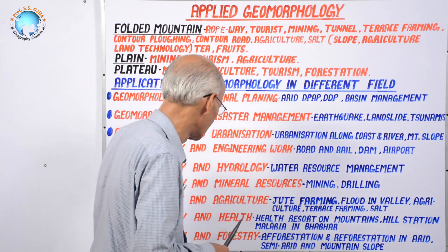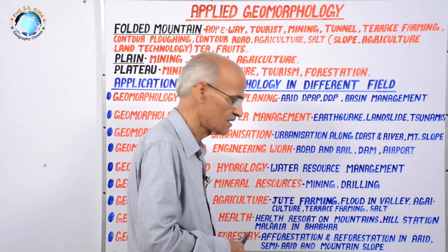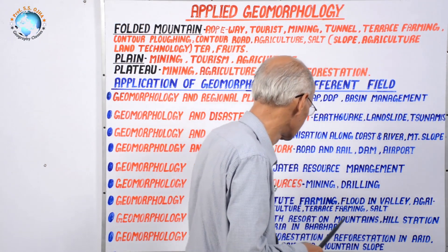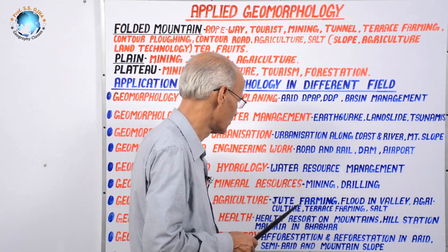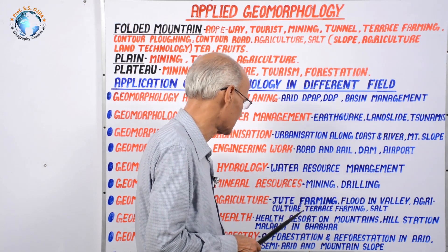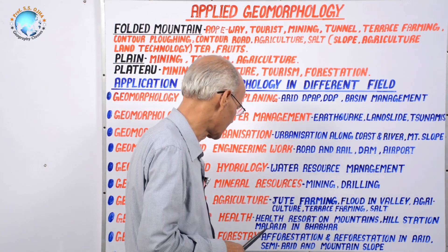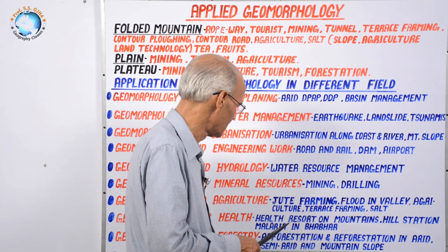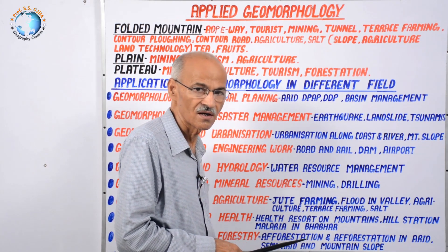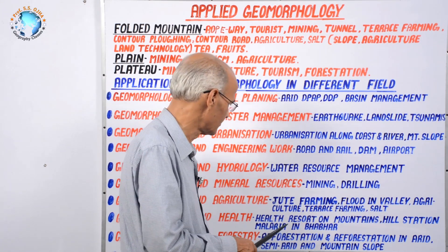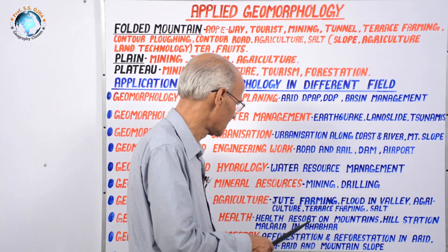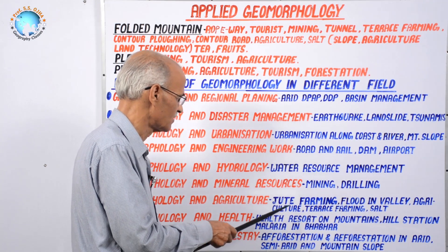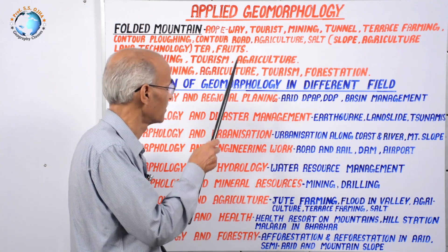Next is geomorphology and health. Geomorphology also controls health — on mountain tops there are health resorts and hill stations, visited by people from plains and plateaus during summer for recreation and health improvement. Contrary to this, in the Bhabhar region, there are phylaria and malaria diseases because water stagnates under boulder landscapes, causing diseases. It is geomorphic process and landform which either causes disease or promotes health, making it part of applied geomorphology.